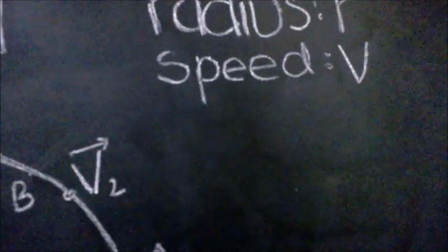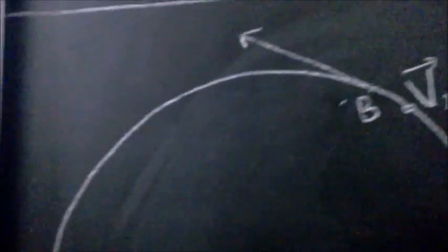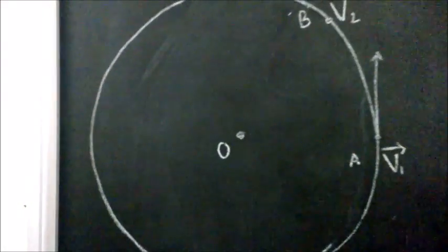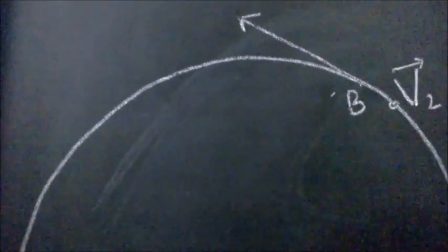So the v only denotes the magnitude of the ball's velocity. Now, let's assume that I have velocity v1 at point A and velocity v2 at point B.